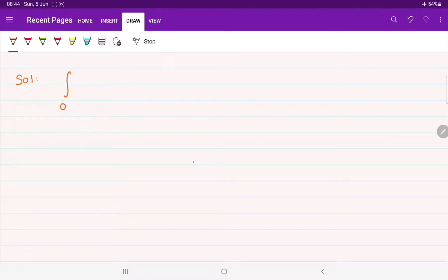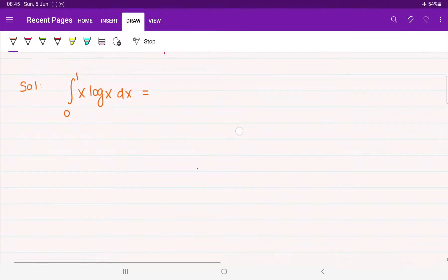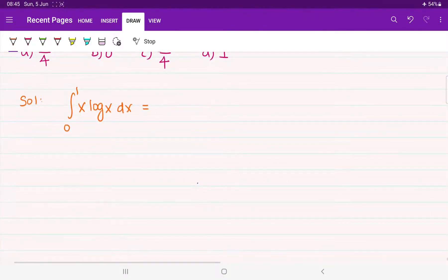So let us take this function and we will be looking for the solution. We know the function is defined as 0 to 1, x into log x dx. Tell me, how can we proceed further? For this question, I have been told, whenever you are observing this type of function, many times just apply by parts method.